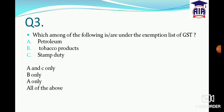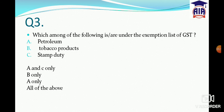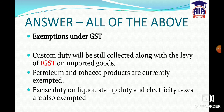The answer is all of the above. In the GST exemption list, petroleum, tobacco products, and stamp duties are all included. Additionally, excise duty on liquor, electricity taxes, and custom duties are also exempted from GST, though custom duties are still collected along with IGST.